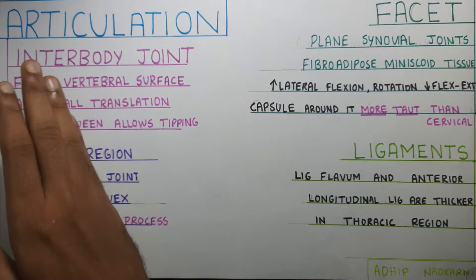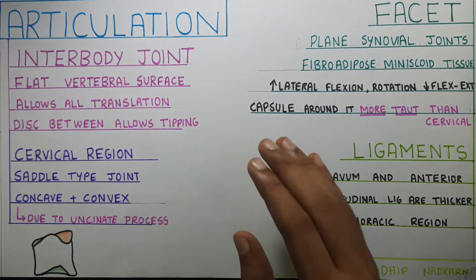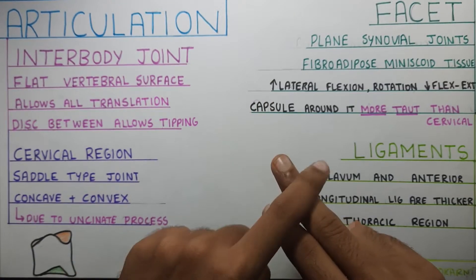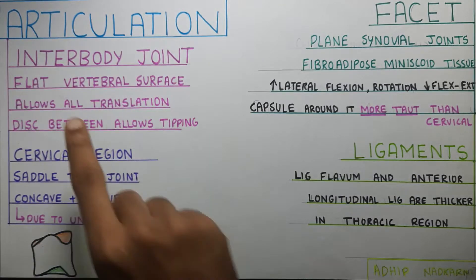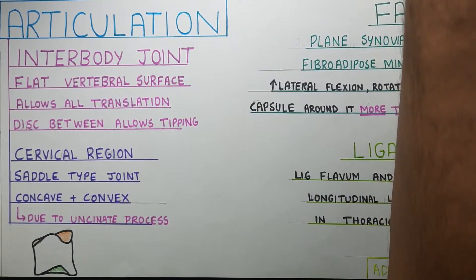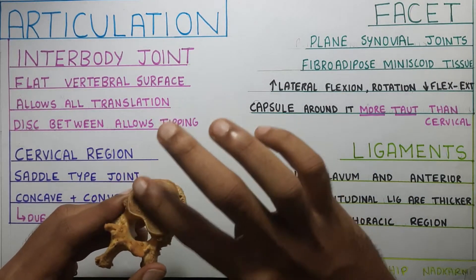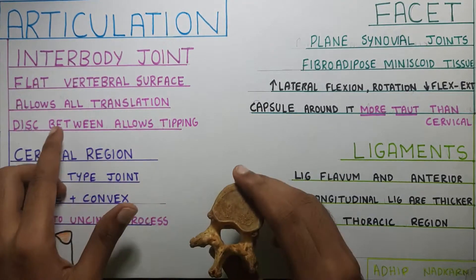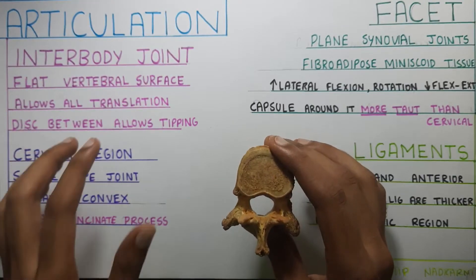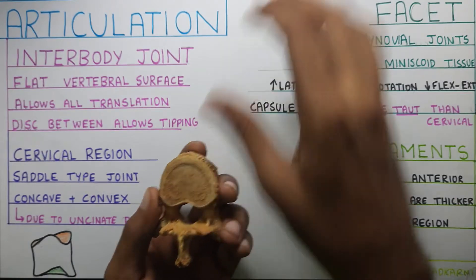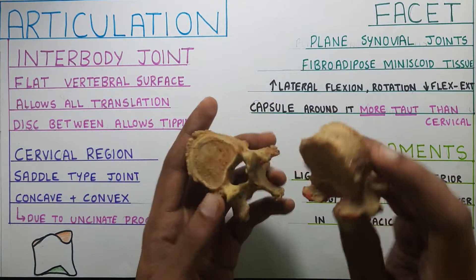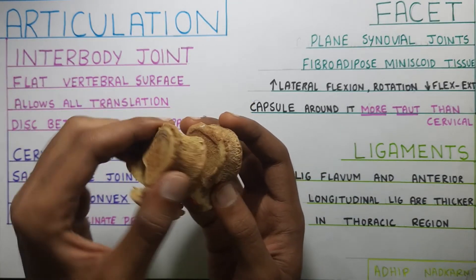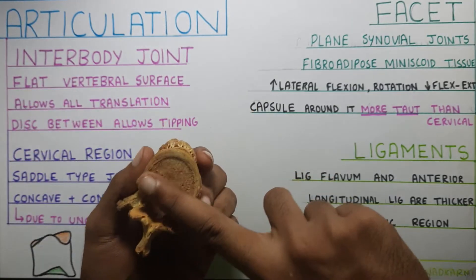Starting with the articulation — the interbody joint and the facet joint. In all the cervical, thoracic, and lumbar spine there are two joints: the interbody joint and the facet joint. At the interbody joint, the surface of the thoracic vertebra is flat — it doesn't have any curves. This flat surface allows translation in all directions. The disc between them allows tipping, so there will be a disc between the two thoracic vertebrae which allows flexion, extension, or lateral flexion — all these tipping movements happen because of the flat surface.